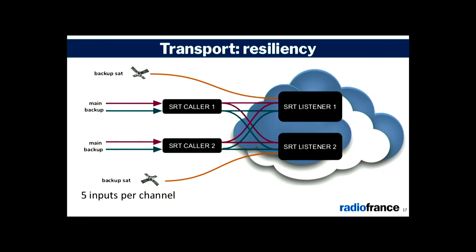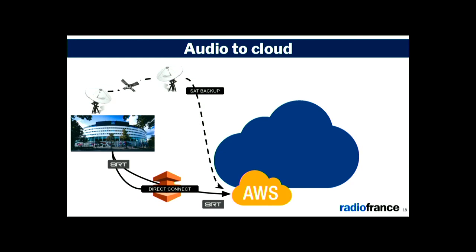We want to transport the stream in a resilient way — a lot of this architecture is about resiliency. Each radio channel has two sources at the home of Radio France, which we call main and backup, and we have a third source which is a satellite backup handled by a third party. The principle is that we have two servers in the home of Radio France taking the two sources of each radio, and we create a full-mesh interconnection between two SRT listeners in the cloud. So at the end, for each radio channel, we get five inputs, and the two listeners are exactly the same.